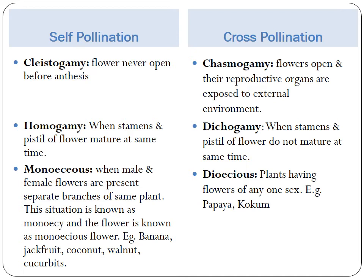Now let us look at the different mechanisms which help self-pollination and cross-pollination. In self-pollination, cleistogamy occurs, where the flower will never open before anthesis — meaning the flower opens only after pollination takes place. Whereas in cross-pollination, chasmogamy helps, where the flower opens and reproductive organs are exposed to the external environment, allowing pollen from another flower to come and pollinate the flower.